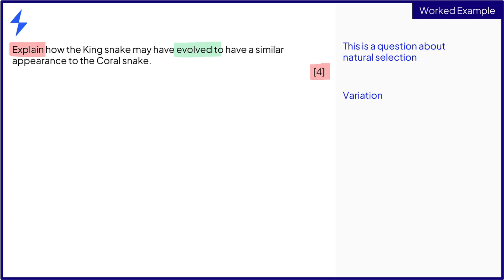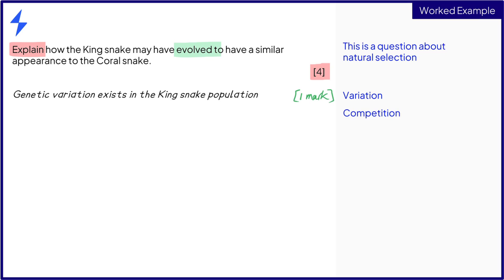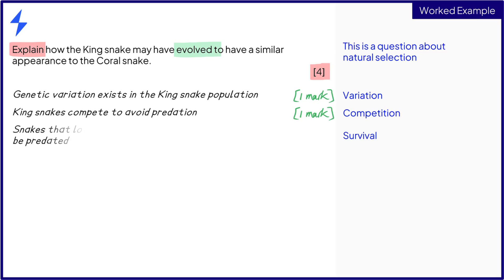The first step in explaining natural selection is always to state that variation must be present. In this example, there is genetic variation in the kingsnake population. There is competition for survival — here the snakes compete to avoid becoming prey for larger predators. There must be an advantageous characteristic that increases survival chances. Here the kingsnakes that have colouring more similar to that of the venomous coral snakes are able to deter predators, so they are more likely to survive.